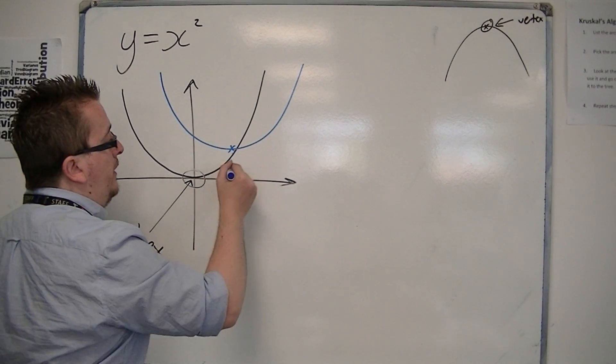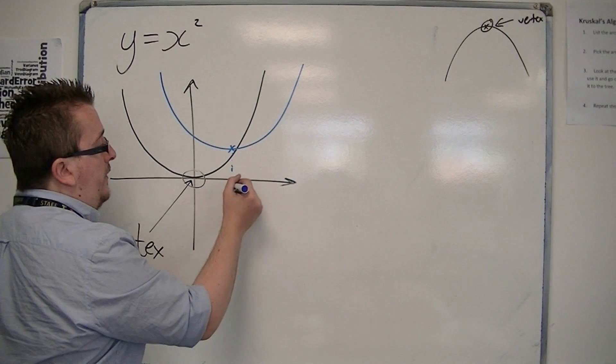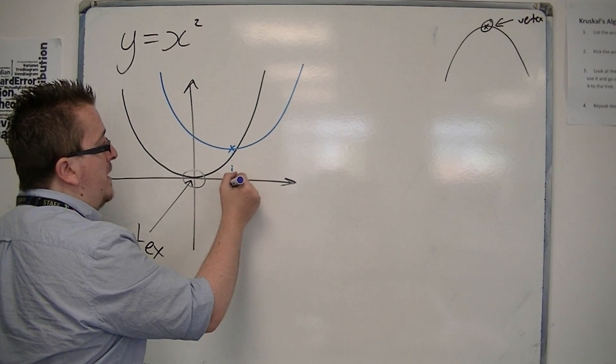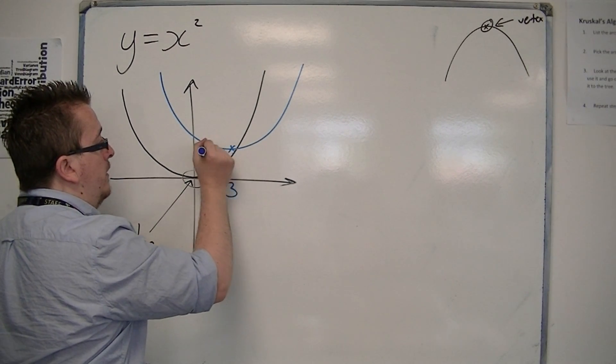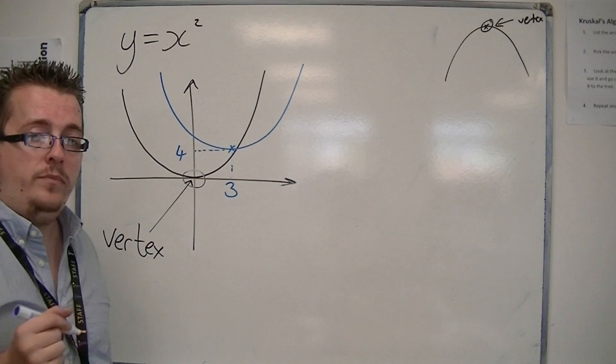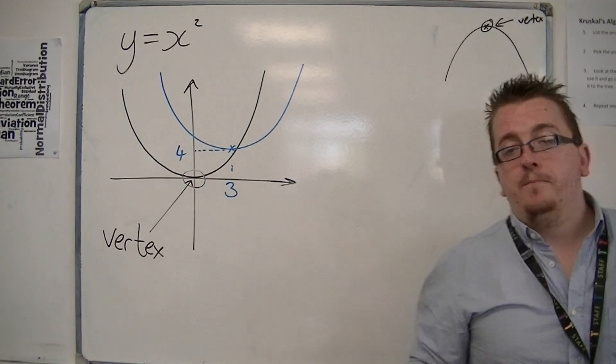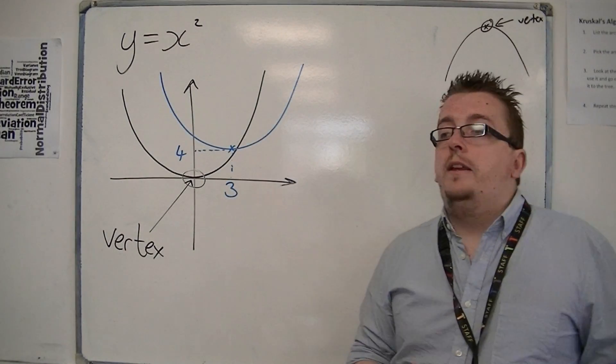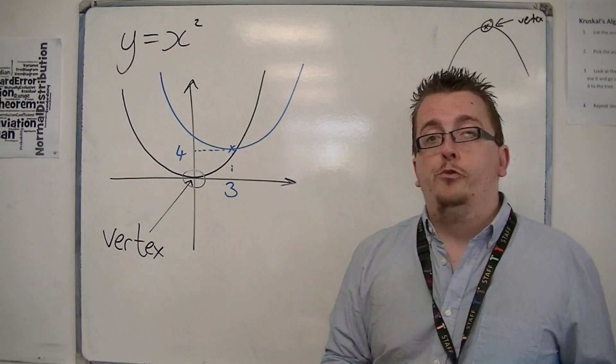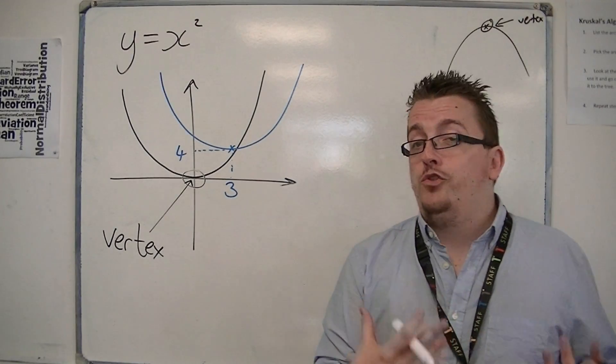Let's say I move the vertex so that the curve is going through 3, 4. Then, what I've actually done is, instead of us saying move, it's known as a translation.